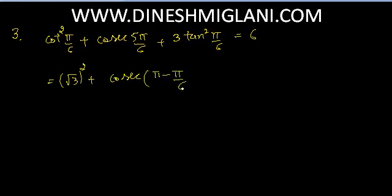Next, question number 4: we have to prove that 2 sin squared 3pi by 4 plus 2 cos squared pi by 4 plus 2 sec squared pi by 3 is equal to 10.